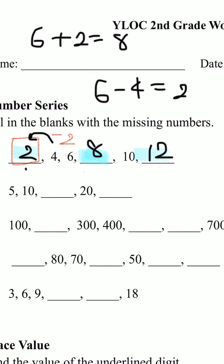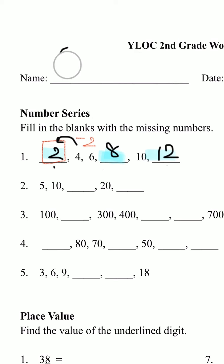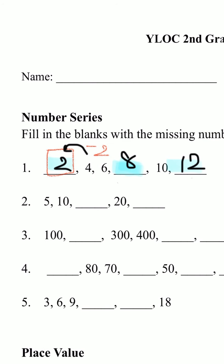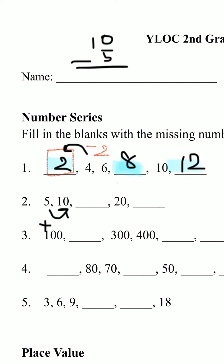Let's try number 2. Number 2, we have 5, 10, blank, 20, and blank. To find the pattern, we're going to do the same thing. We know that it's getting bigger, so we're going to add something to get the next number. To find that, we're going to do 10 minus 5. 10 minus 5 is 5. So we know that we're getting bigger by 5.